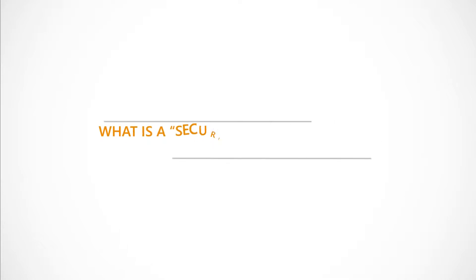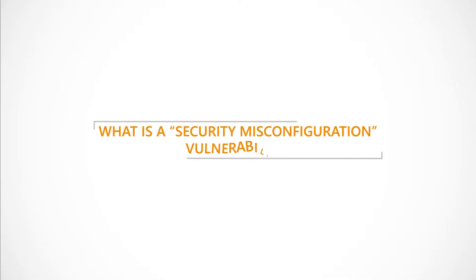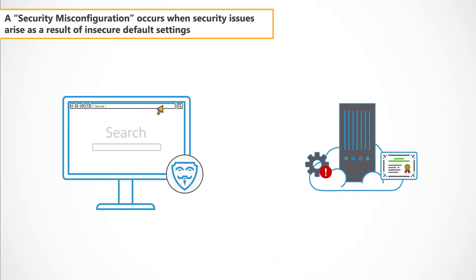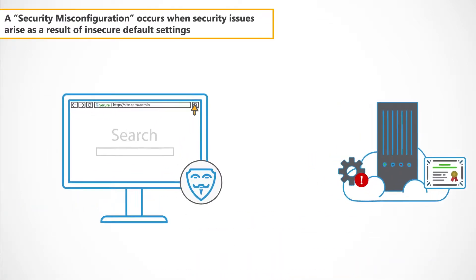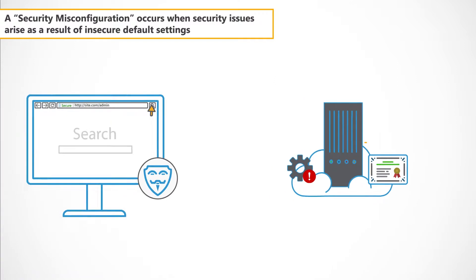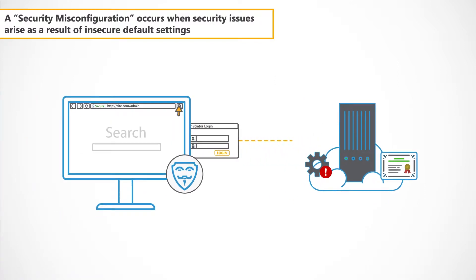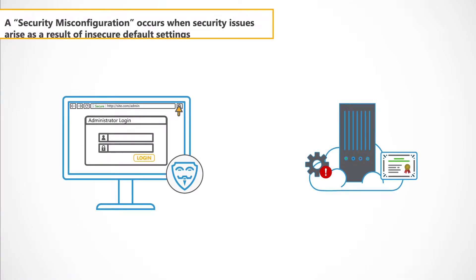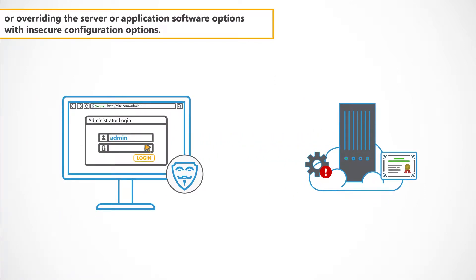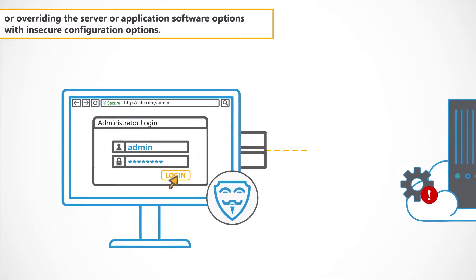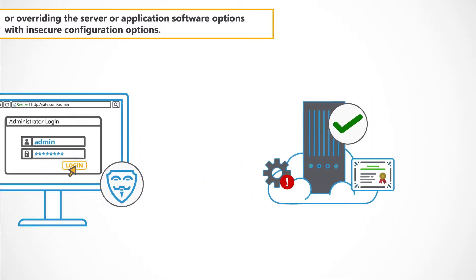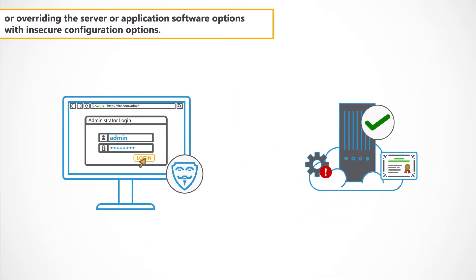So, what is a security misconfiguration vulnerability? A security misconfiguration occurs when security issues arise as a result of insecure default settings or overriding the server or application software options with insecure configuration options.